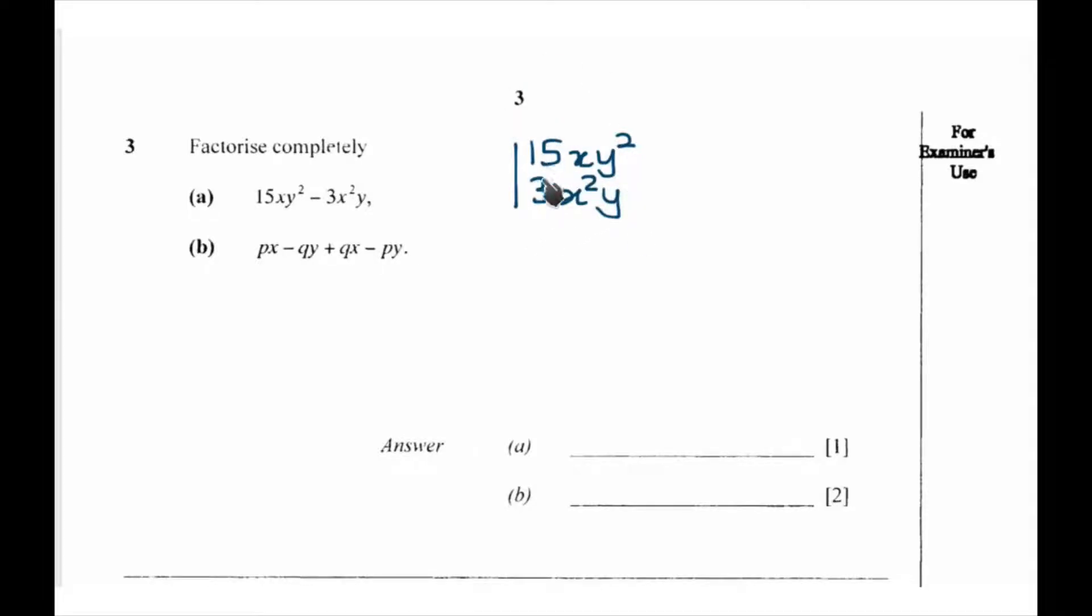We start with the numbers. 3 is the common factor of 15 and 3. We can divide 3 into 15 and get 5, and 3 into 3 and get 1.